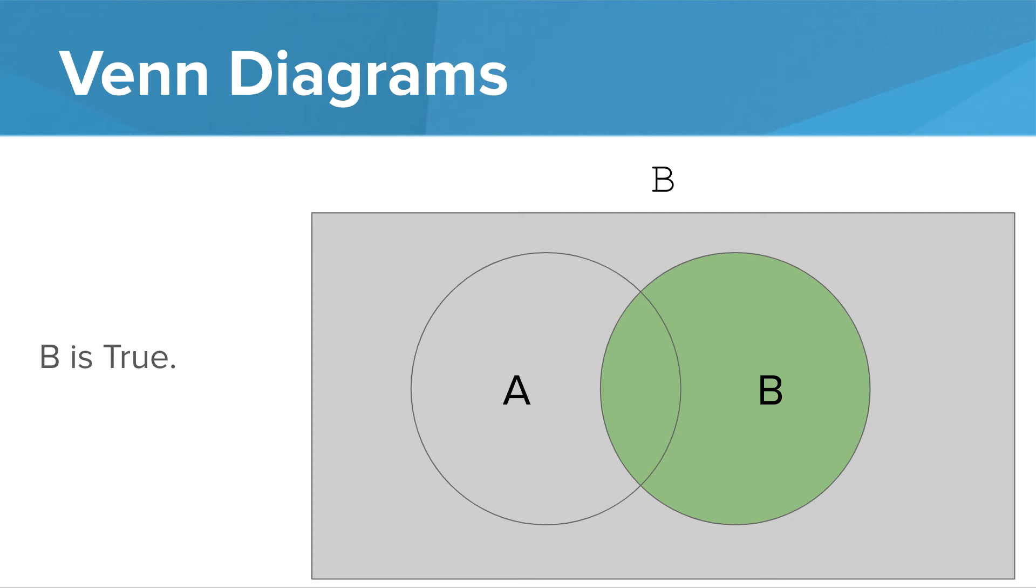This region represents B being true. And this region represents B being false and not B being true.